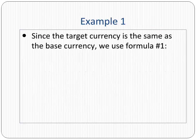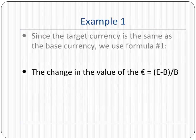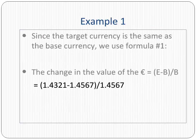Since the target currency is the same as the base currency, we use formula number 1. The change in the value of the euro equals the ending value minus the beginning value over the beginning value. That equals 1.4321 minus 1.4567 over 1.4567.